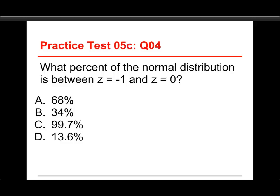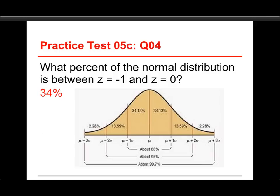All right, number four. What percent of the normal distribution is between a z of negative 1 and z of 0? The choices are 68%, 34%, 99.7%, or 13.6%.